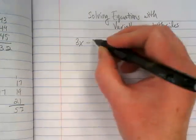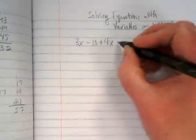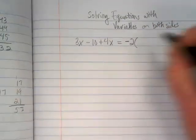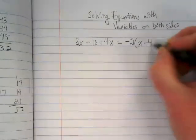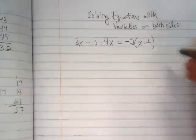First, I'd like you to write down 3x minus 10 plus 4x is equal to negative 2 that we're going to distribute to x minus 4, plus 9.